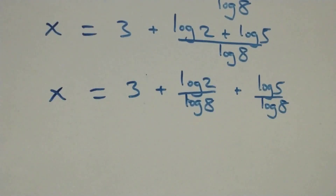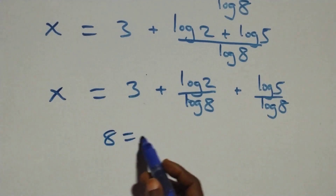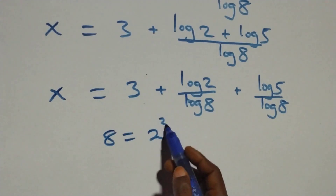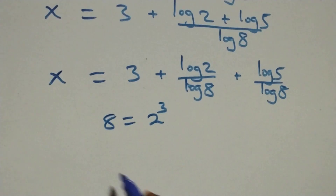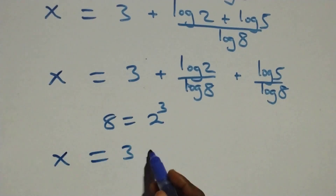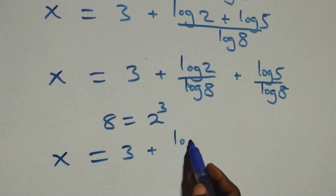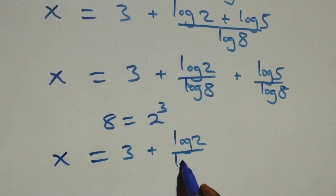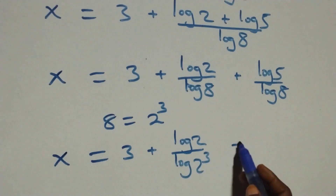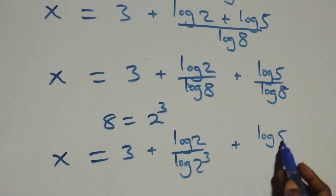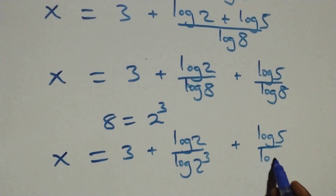Now, 8 can be written as 2 cubed. Applying the power law, log 8 equals 3 log 2. So we have x equals 3 plus log 2 over 3 log 2 plus log 5 over 3 log 2.